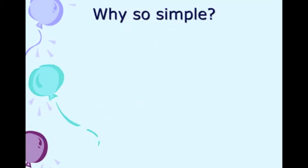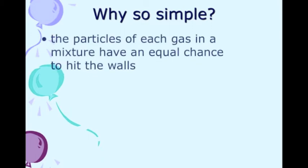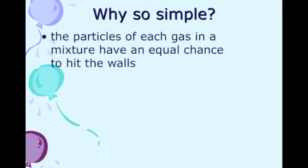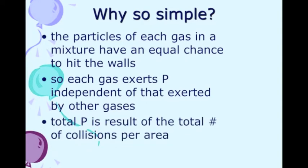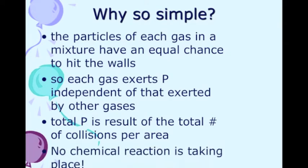So why is this just a big long addition problem — why something so simple? Well, each particle of each gas has an equal chance of hitting the wall, so they all contribute to the pressure. The pressure of each gas doesn't depend on what other gases are in there — each gas just does its own thing. The total pressure is the result of the total number of collisions per area, so the identity of the gas doesn't matter. And remember, no chemical reaction can be happening — if there's a chemical reaction going on, this does not apply.